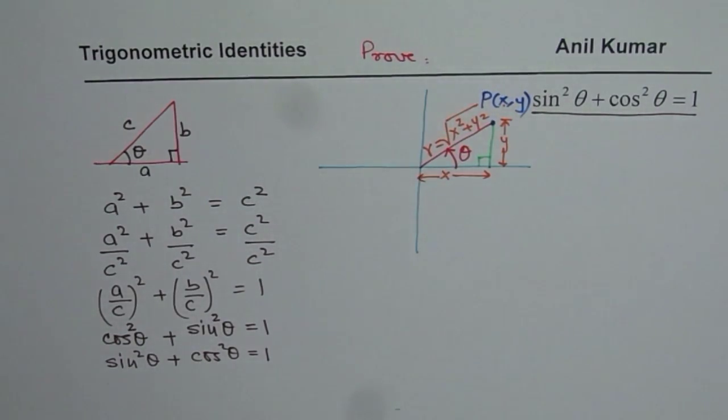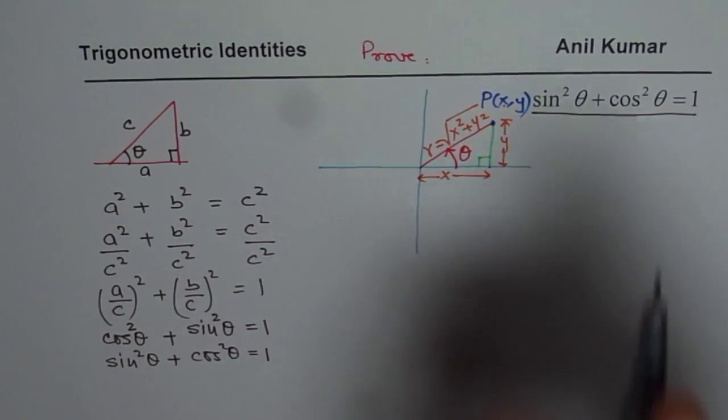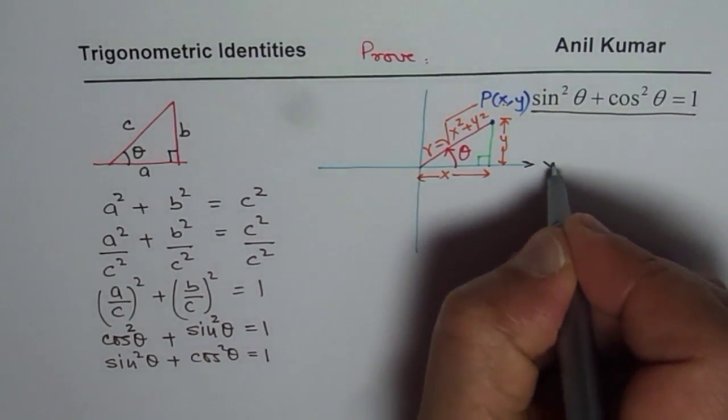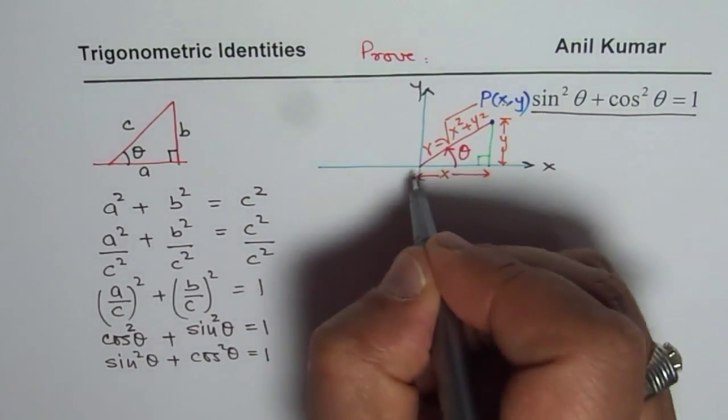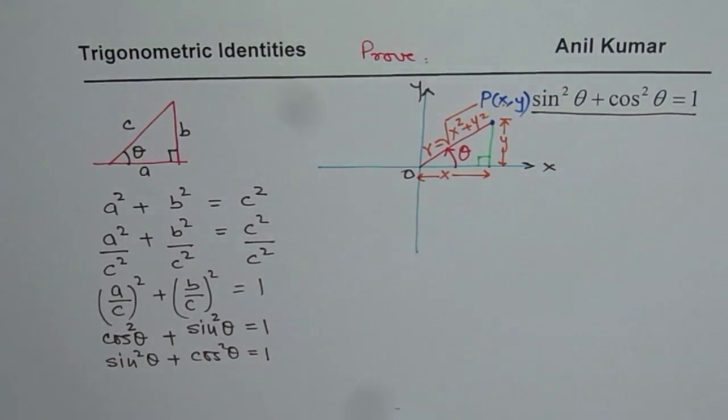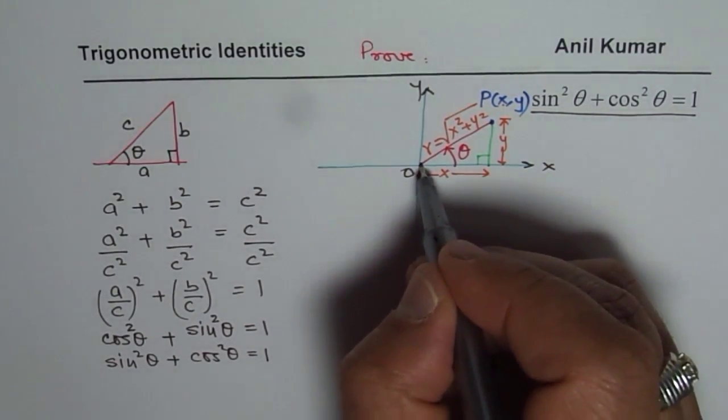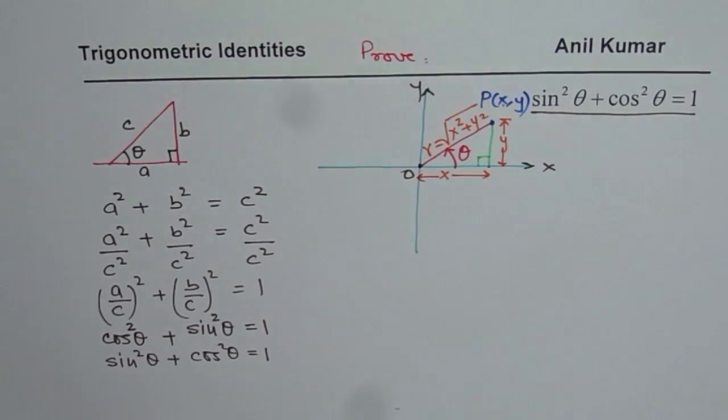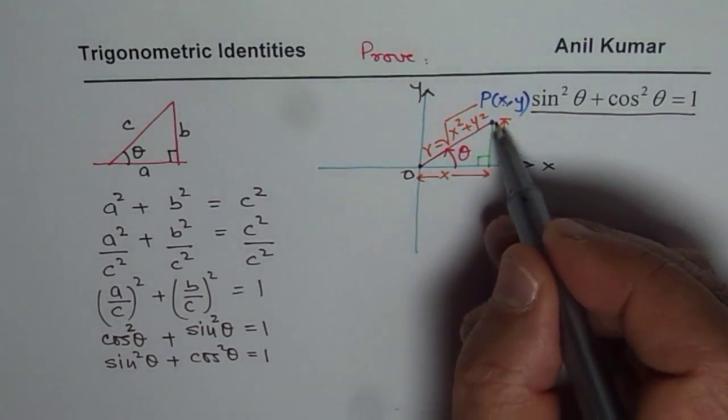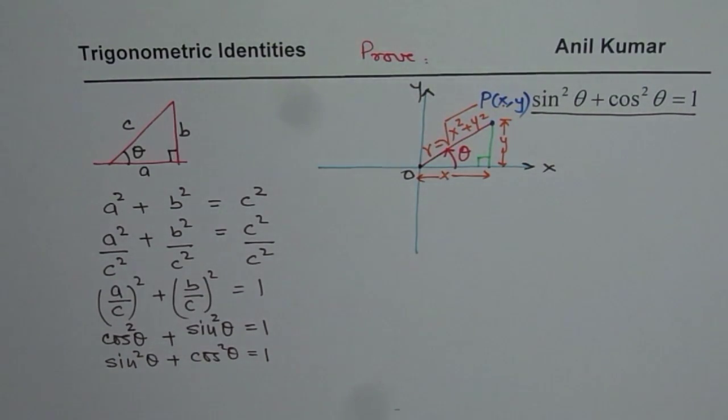So that becomes the hypotenuse for the given right triangle. And we are considering a coordinate system where x is l and y are the x's, that is the origin. So whenever you have an angle, this is angle in standard position, where the initial arm is along the x-axis. And that's the terminal arm. Now, let us try to prove Pythagorean identity here. How are we going to do it?